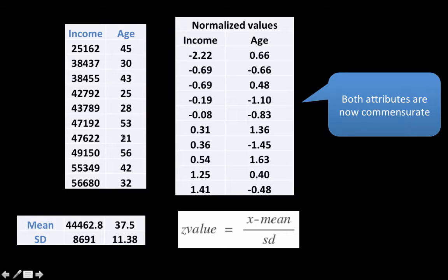Income ranges from 5,000 to 56,000 and age ranges from 21 to 56. The two are clearly incommensurate. The magnitudes of incomes are so much higher, and if you just used income and age as they are for calculating distances, then income would dwarf age. It would dominate all distance calculations. You might as well forget about age — it won't play any role.